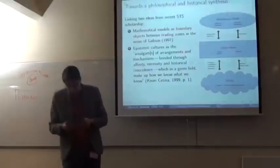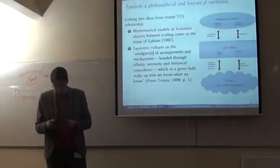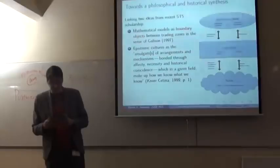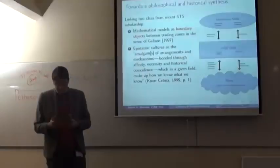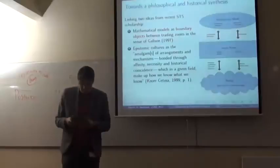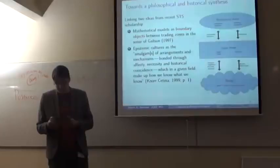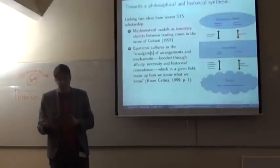In order to integrate these threads into a synthesis that can enable our understanding of what I want to call cultures of Mathematisation, I wish to introduce two further ideas linking notions from recent science and technology studies. First, that of mathematical models as boundary objects, bridging different trading zones in the sense of Galison, and second, that of epistemic cultures defined by Knorr Cetina as amalgams of arrangements and mechanisms bonded through affinity, necessity and historical coincidence which, in a given field, make up how we know what we know. So in his seminal book, Galison explored the notion of boundary objects in relation to the construction of physical apparatus and technology, but it can quite easily be applied to mathematical models, I think. These too can function as the boundary objects that enable communication between different groups with different backgrounds, interests and disciplinary matrices, for instance in the sciences or in industry.